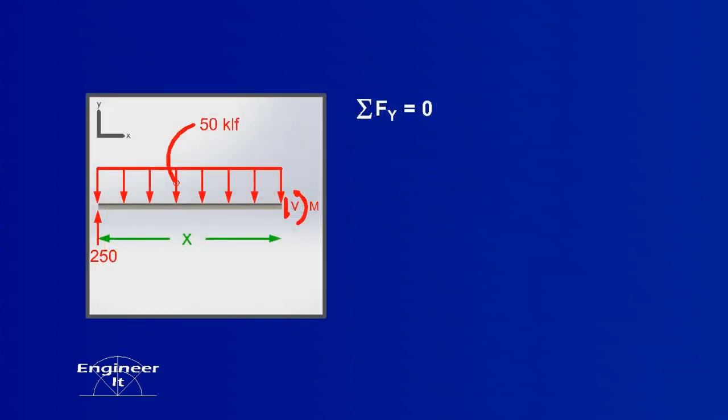Now cut the beam just before the end and sum the forces in the Y direction. Treat the beam length as an unknown value, X. Solve the equation for the shear force, V.